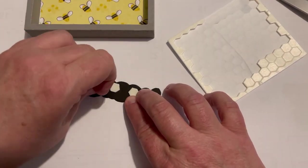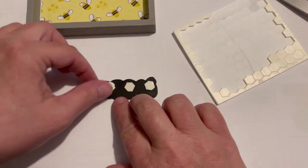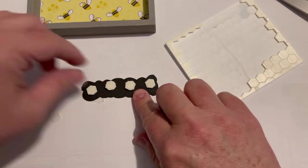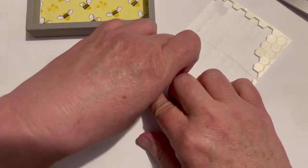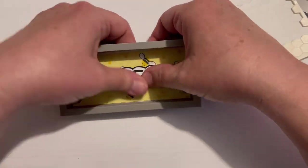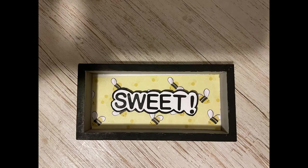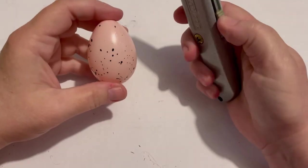I put some of the pop dots, the dimensionals on the back to give it a little lift. Pop that into place. And I didn't show on here but I did add black around the top part of that. You can see it in this spot. Next DIY coming right up.